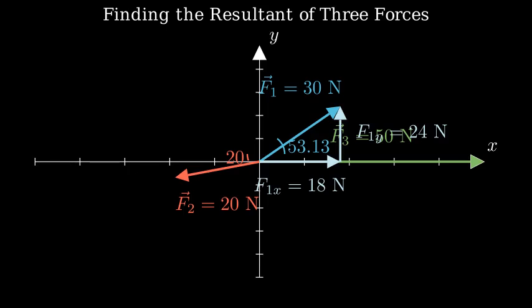Next, let's find the components of f2. The x component is f2 cosine of 200 degrees, which equals negative 18.794 newtons. The y component is f2 sine of 200 degrees, which equals negative 6.84 newtons.